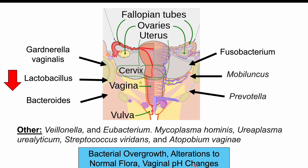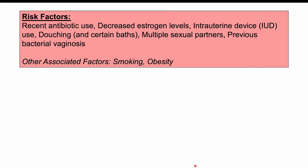Ultimately, all of this has to do with bacterial overgrowth of certain species, alterations in other flora — particularly reductions in Lactobacillus — and vaginal pH changes. Normal vaginal pH is lower and more acidic. If the vaginal pH increases, bacteria can grow and proliferate more than usual because the acidic environment that normally suppresses them becomes less effective. This is another reason we see issues with bacterial growth, and it leads us into risk factors.